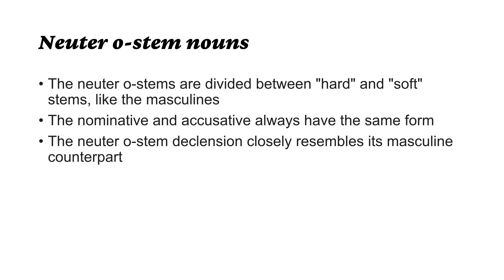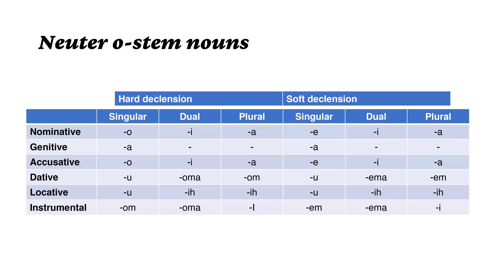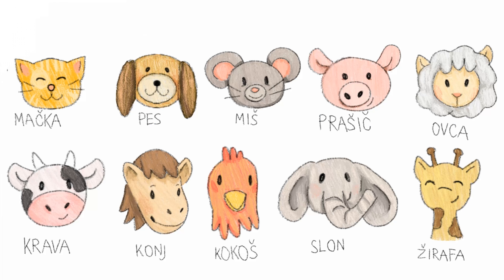Nominative and accusative are always the same. So first, we are going to look at the word mačka. Mačka means cat. Because it ends with an A, mačka is a feminine word. And because it ends with A, it's an A-stem. So we have a feminine A-stem noun.